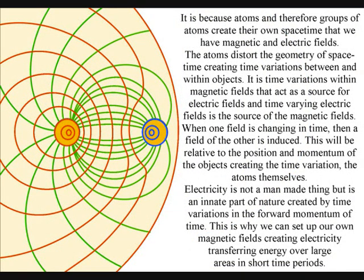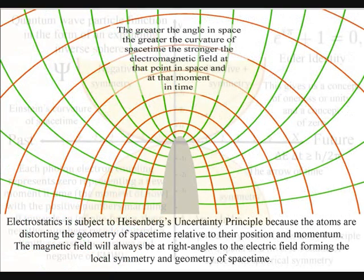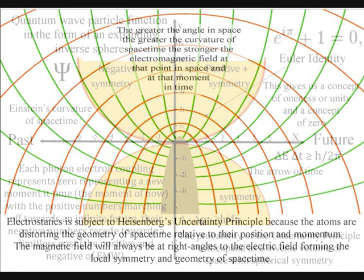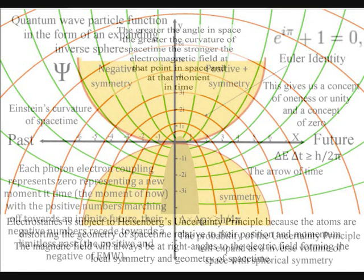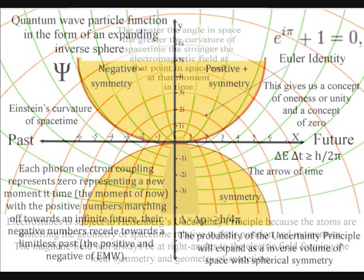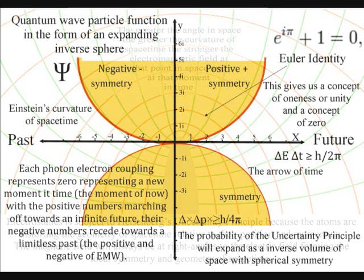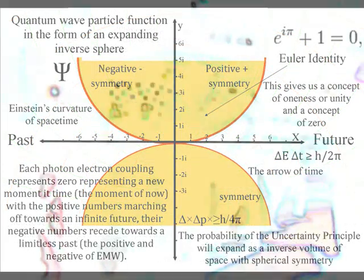A time-varying electric field acts as the source of a magnetic field, and the time-varying magnetic field is the source of electric fields. When either field is changing in time, then a field of the other is induced. This will be relative to the position and momentum of the objects creating the time variation, the atoms themselves.